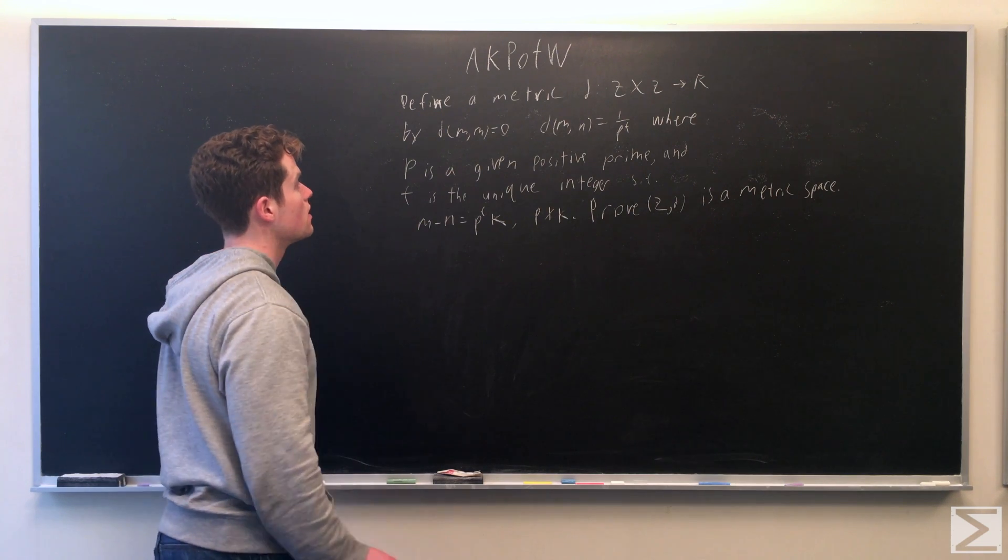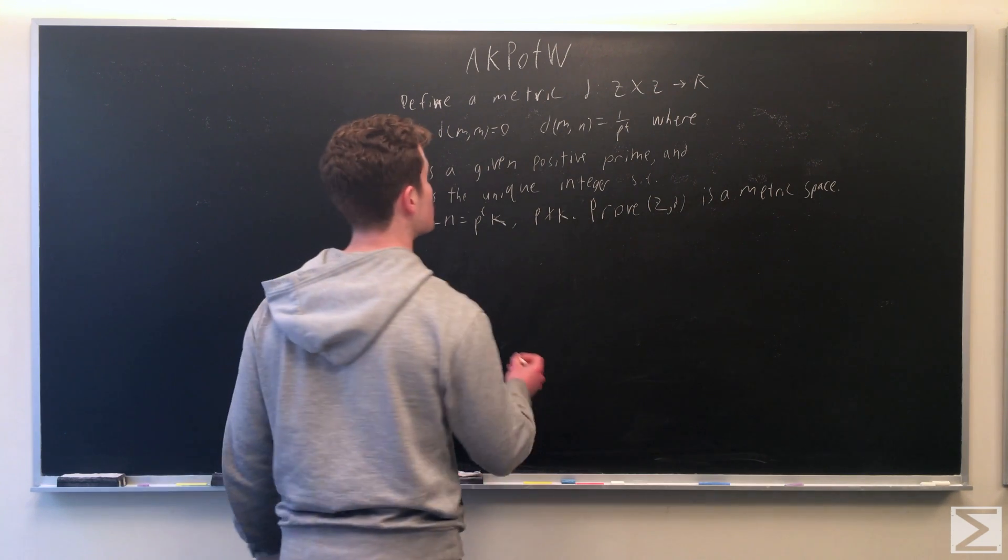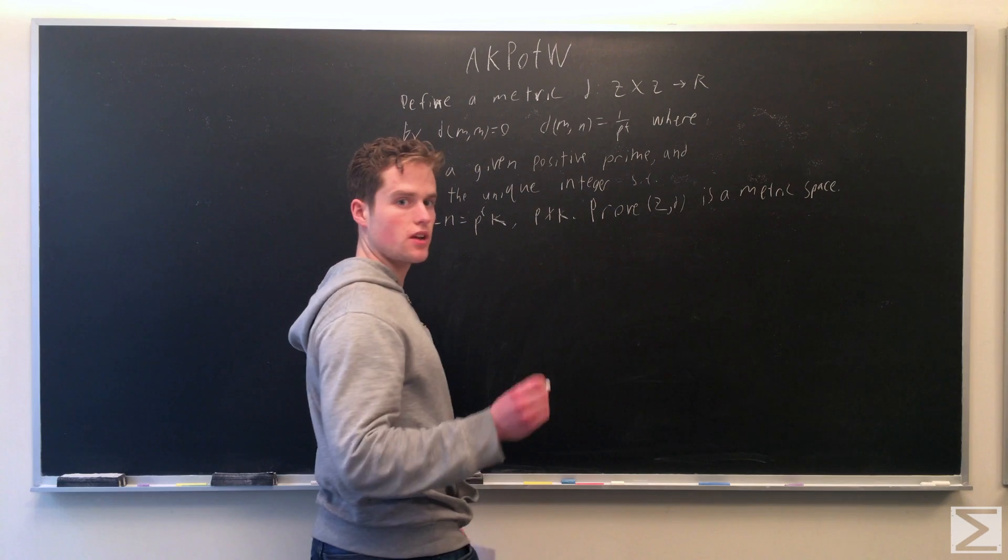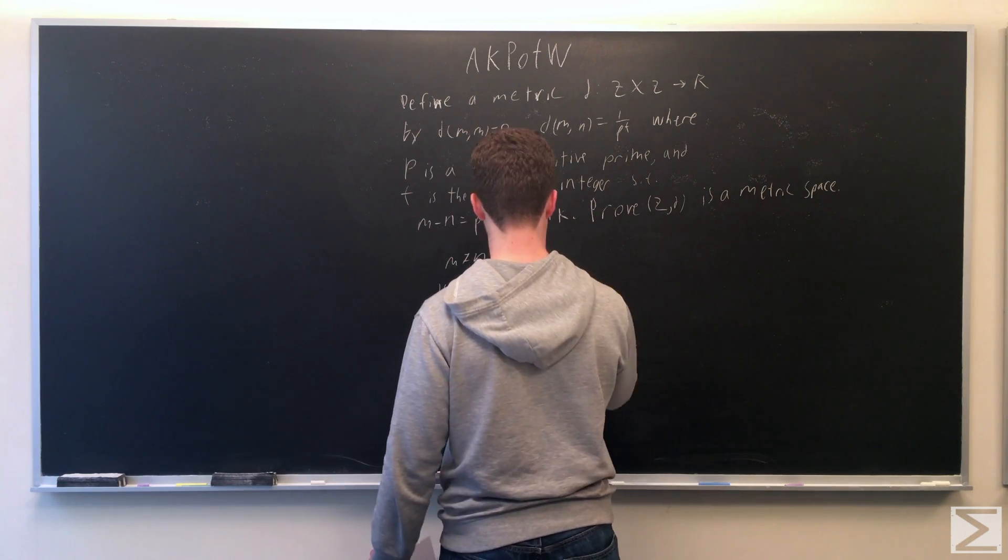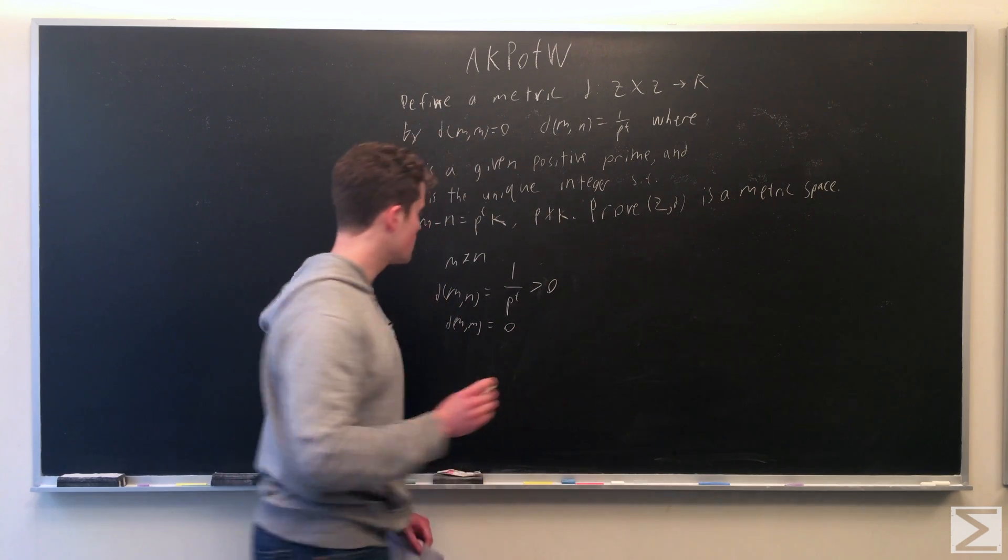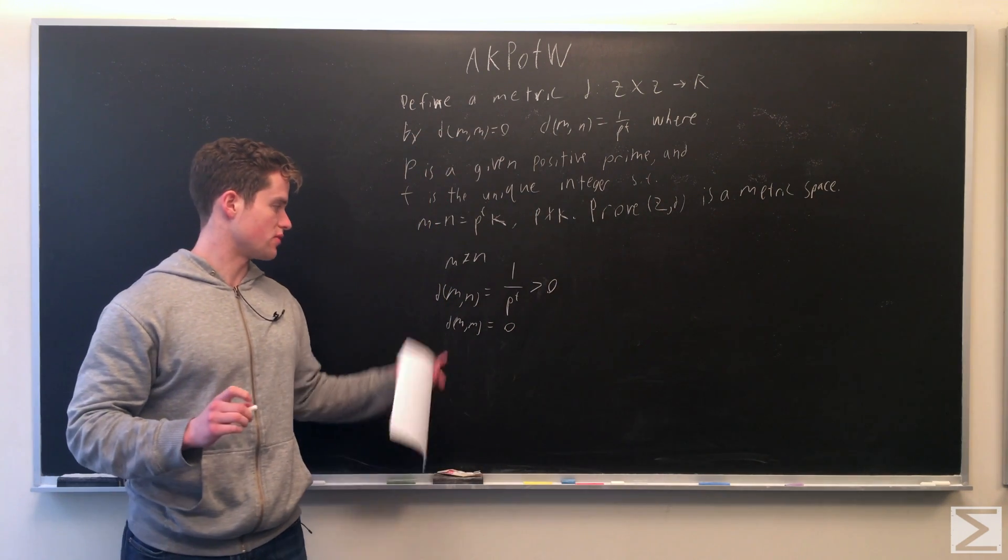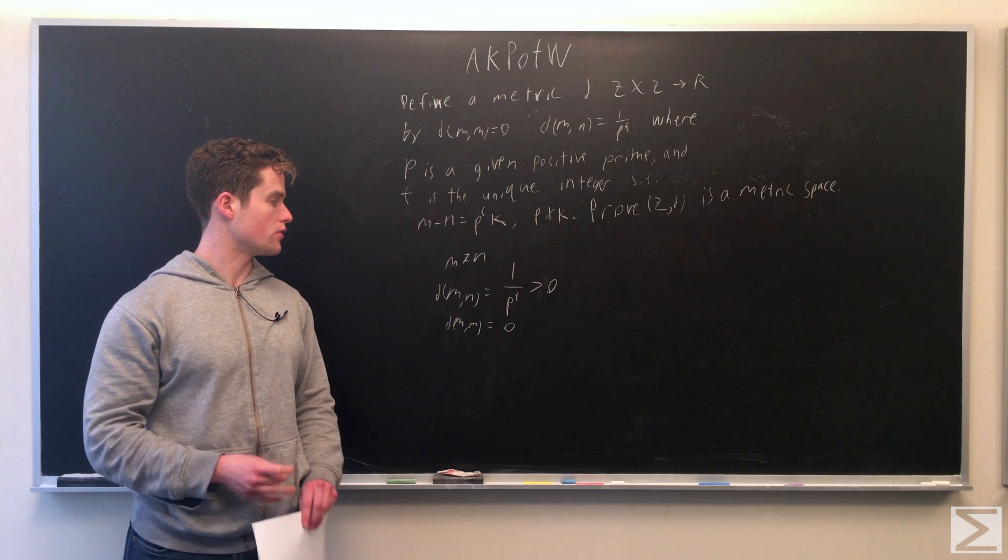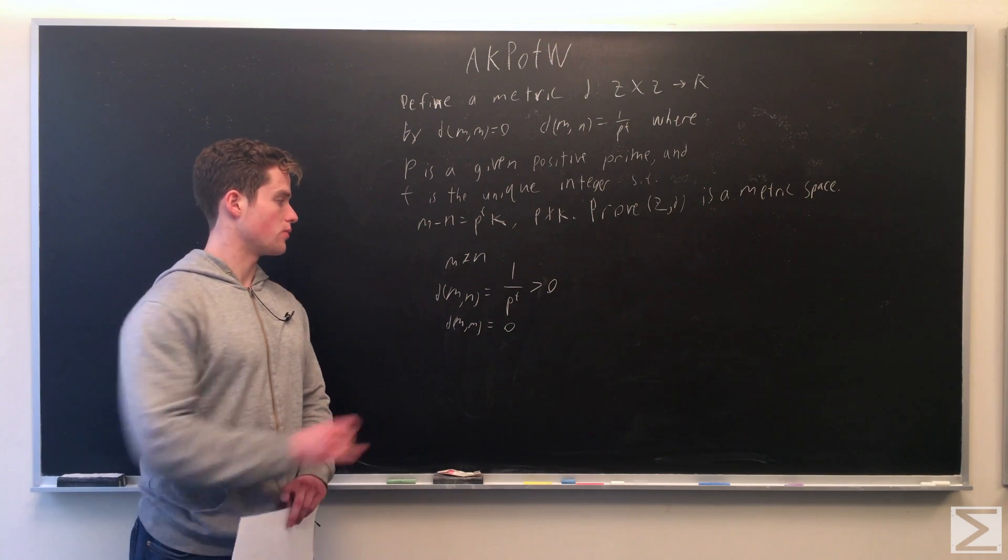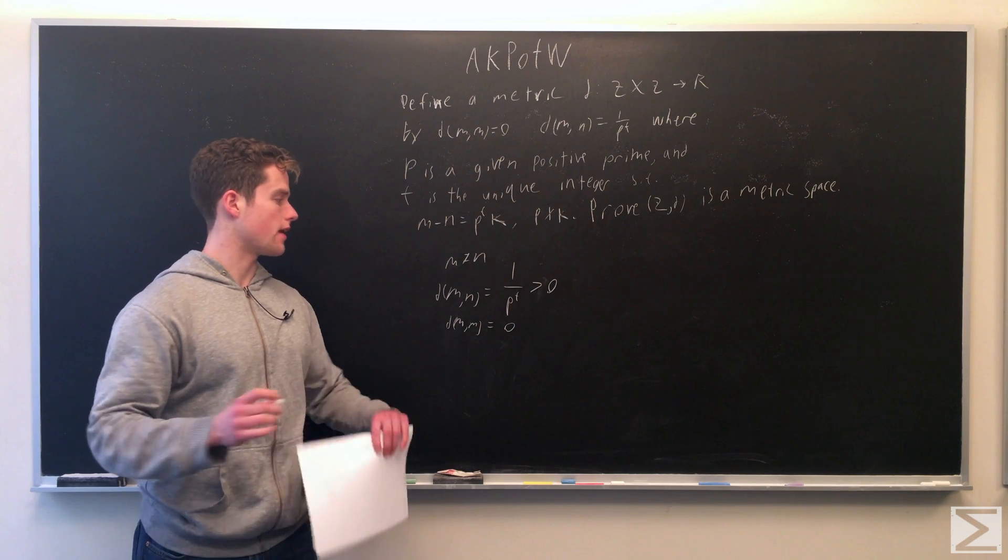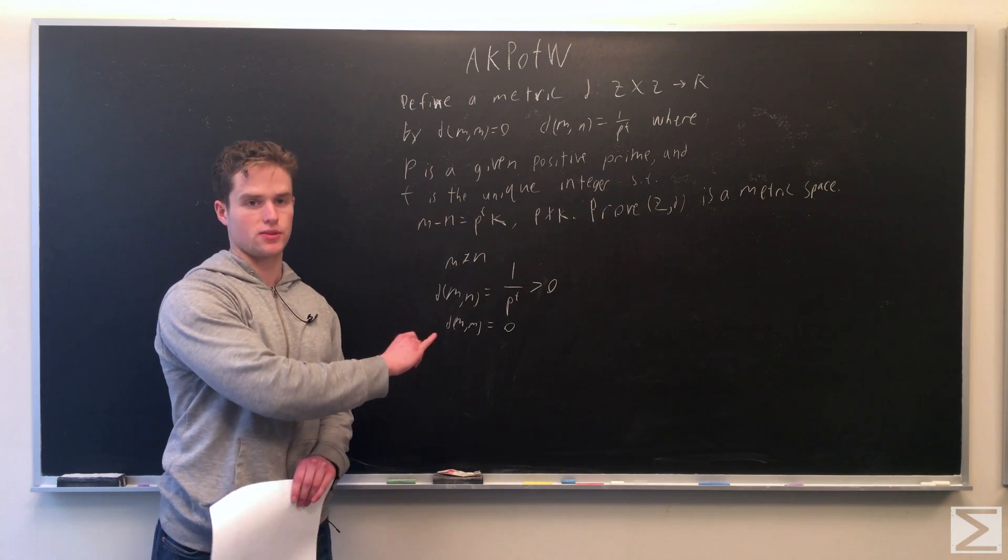First, if m does not equal n, the distance between m and n is 1 over p to the t. The lowest value of t is just zero, which would give us one. And if t is anything bigger than that, this is always a positive number which is always going to be greater than zero.